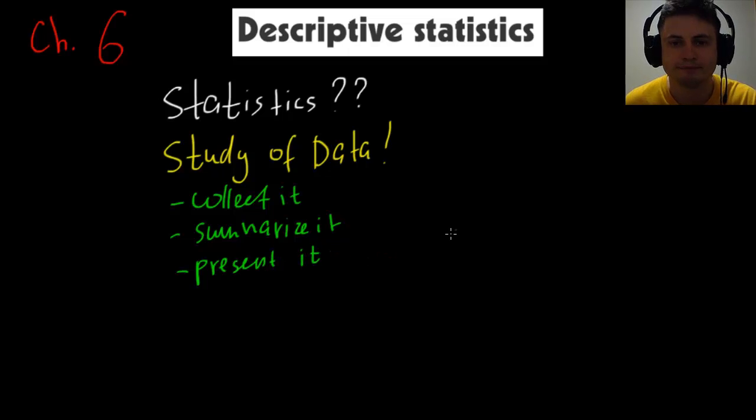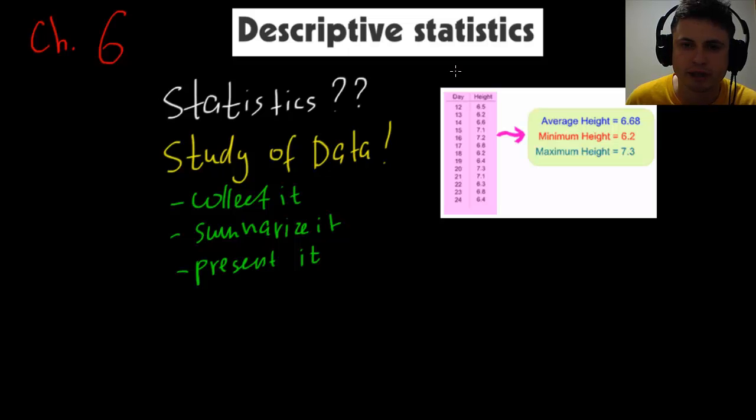So let me show you a simple example. So for example, here is a kind of a rudimentary example of data and this column says days, and this column right here says height. And this could be anything, but I think this specifically refers to some kind of a water height depending on the day and it probably measures tides as well. So here, for example, day 12 it says 6.5, day 13, 6.2, and every day the height is different.